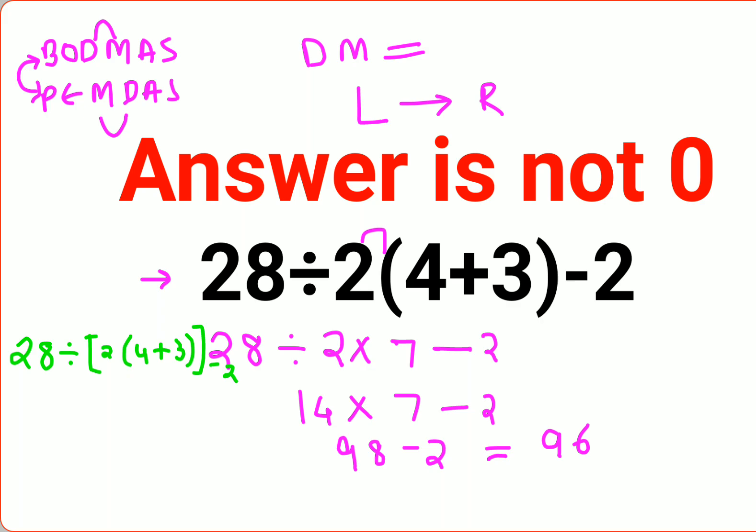So now like I said, first we will do the brackets according to BODMAS and PEMDAS. We will keep 28 divided by as it is, put the square bracket, and first we will do the inner bracket. Then we have 28 divided by 2 times 7 which is 14, minus 2.